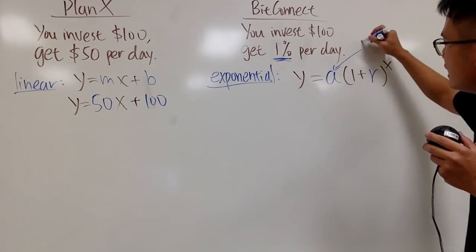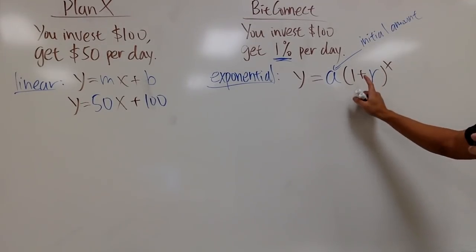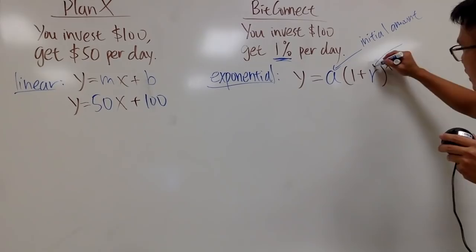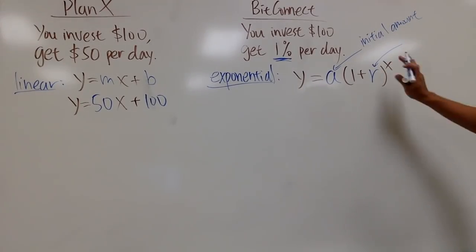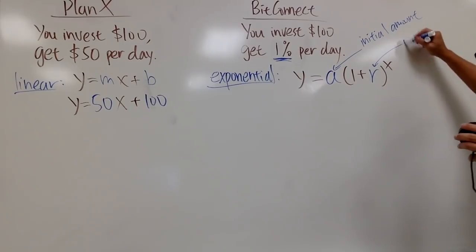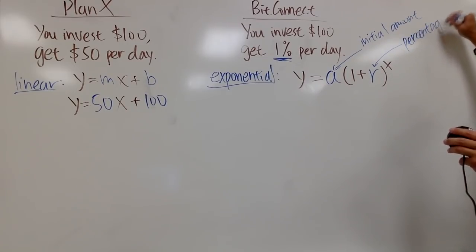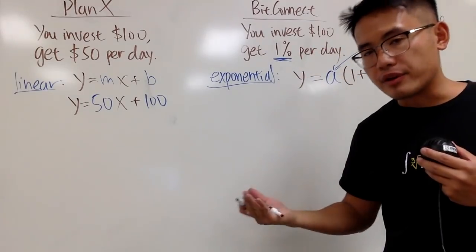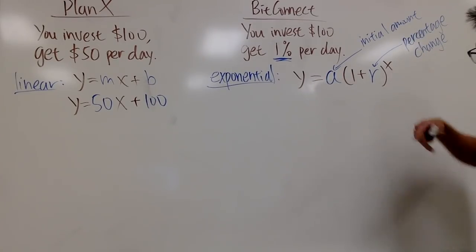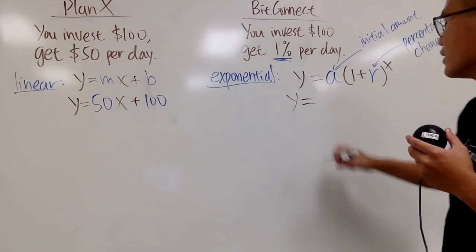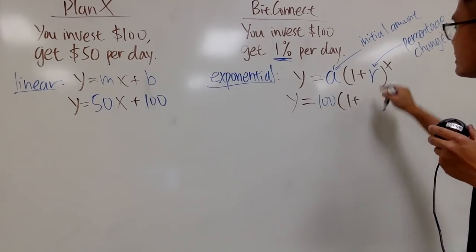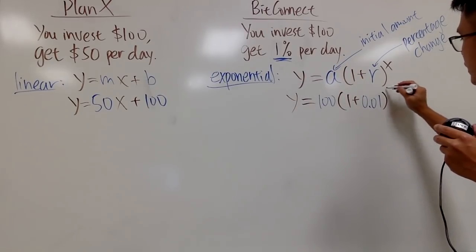Right here, the a is the initial amount. And then you have the parentheses and you have the 1. And it's always 1 because originally, you have 100%. That's the 1. And the r right here, yes, it's also a rate. But I would like to emphasize this right here. It's not the same as that. You have to pay attention to the percentage change. So the r right here is the percentage change. And as you can see, you are getting 1% per day. So the r in this case will be 0.01 because of the 1%. And it's positive. And the x right here is also the number of days. And the y right here is also money you have altogether in the account.